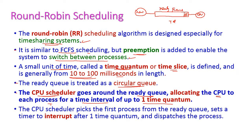Once the time slice is finished, an interrupt occurs — that is the preemption. Again, this particular process will go back to the ready queue itself.